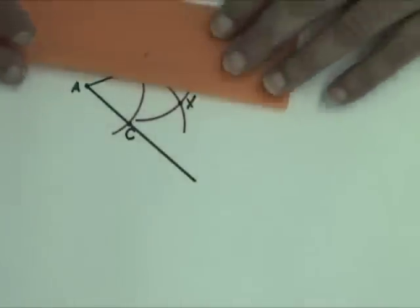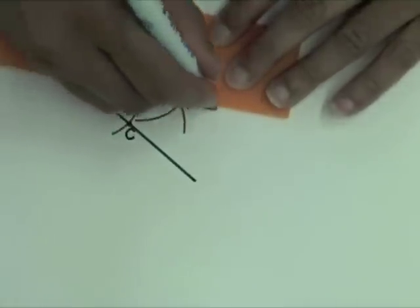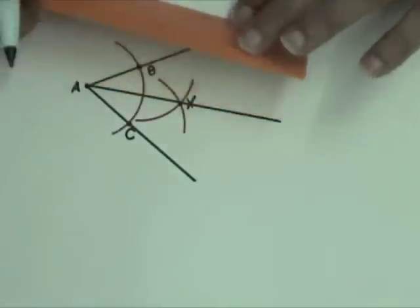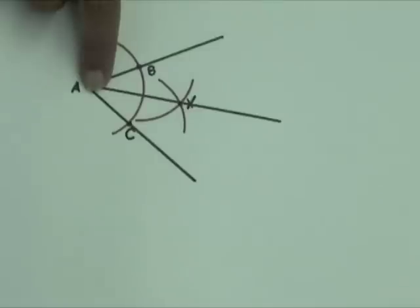Draw a half line with endpoint A that passes through X. This half line bisects angle A.